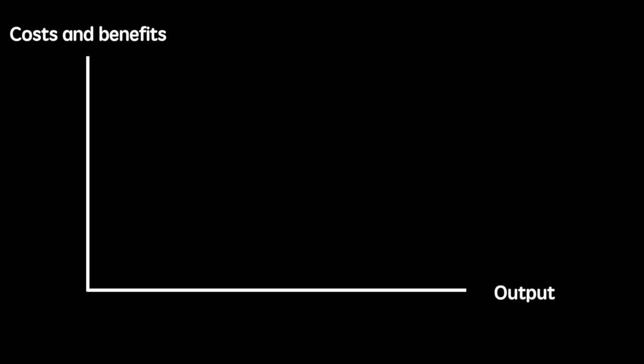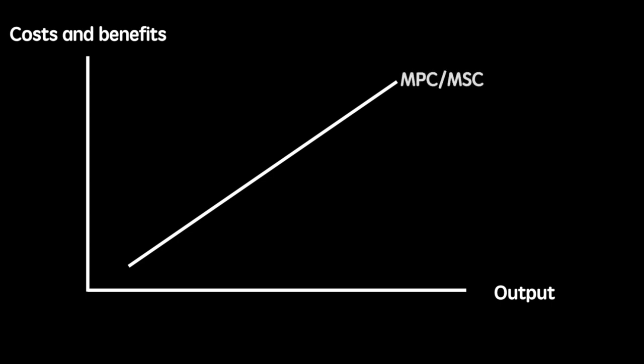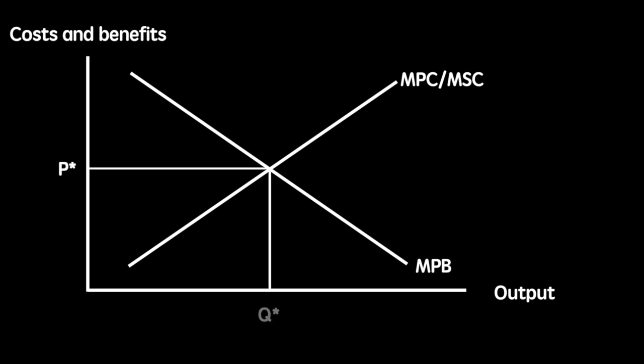When laying out the diagram of an externality, we do so with costs and benefits on the y-axis and output on the x-axis. Our marginal private cost and marginal social cost are the same here because we assume there are no external costs. The marginal private benefit curve represents the benefit gained by the additional consumption of a good or service. The equilibrium price and output for this combination is P star Q star, which is what the free market would provide. If we factor in the marginal external benefit and add that to the marginal private benefit, we arrive at our marginal social benefit.